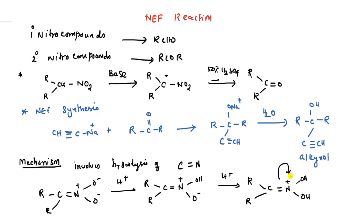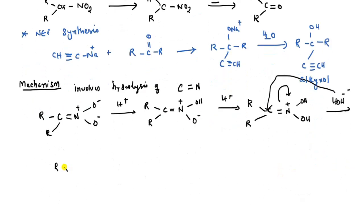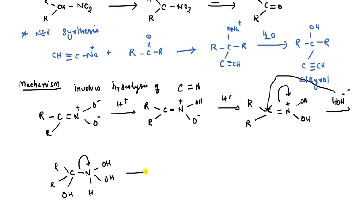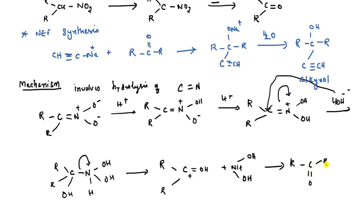The intermediate formed is nitronate acid. Finally, hydrolysis occurs, the C–N bond is broken, which gives the carbonyl product.